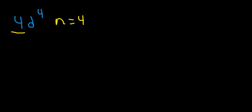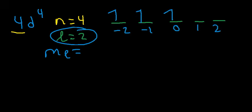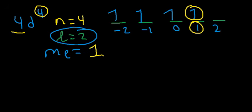Let's try 4D4. N is four. For D, L is two — because for S, L is zero; for P, L is one; for D, L is two; and for F, L is three. The D sublevel has five orbitals, so ML can vary between negative two, negative one, zero, one, and two, because L is two. We're interested in the fourth arrow, and it landed on the orbital that has the value of one. Because it's an up arrow, the spin is positive one half.